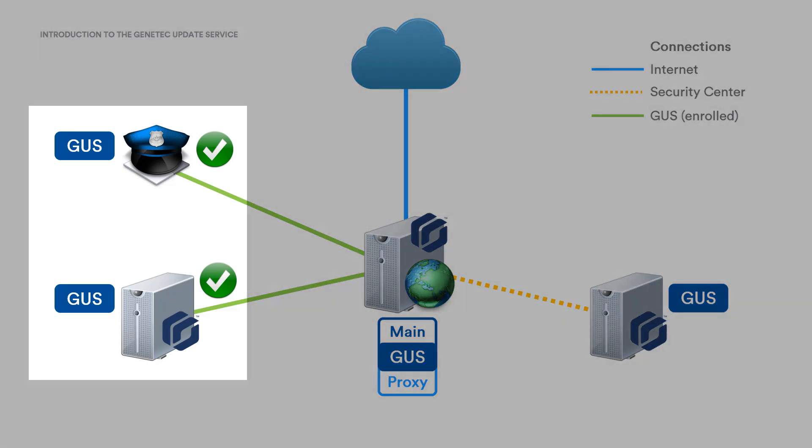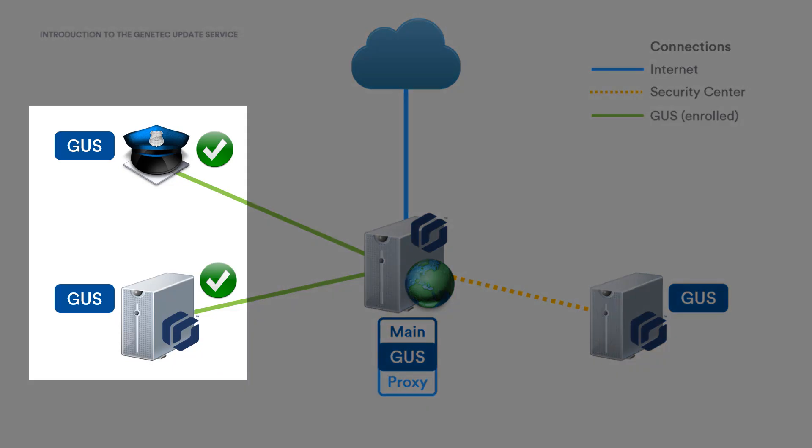We can also have a machine configured as a server or workstation. These are machines that are enrolled on the main GUS and are only able to install updates locally on their own machine. The actual software is received from the proxy machine, so no Internet access is needed.